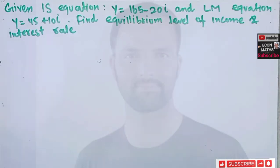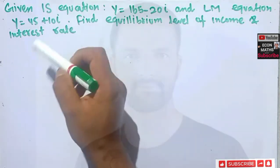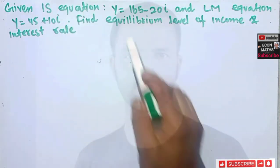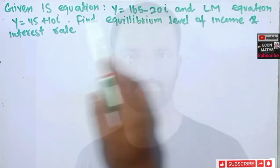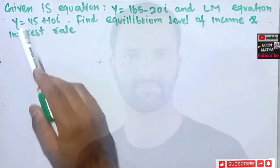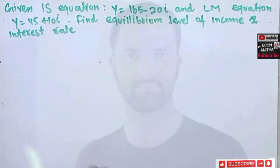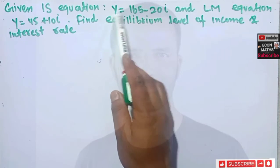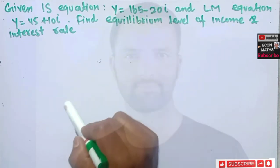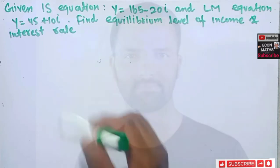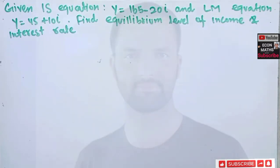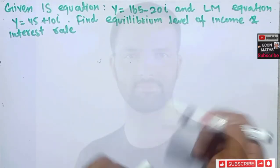In this video we will try to solve a problem asked by a friend on YouTube. The question is: given the IS equation Y = 165 − 20I, and the LM equation Y = 45 + 10I, where Y is the income and I is the rate of interest, find the equilibrium level of income and interest rate.